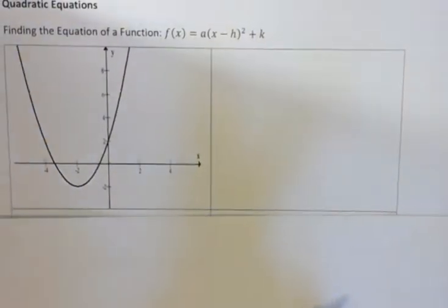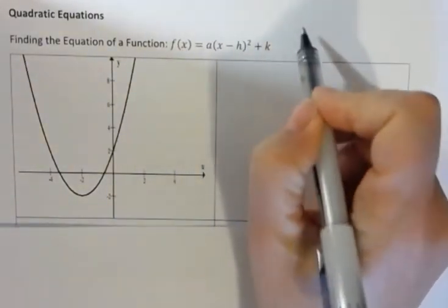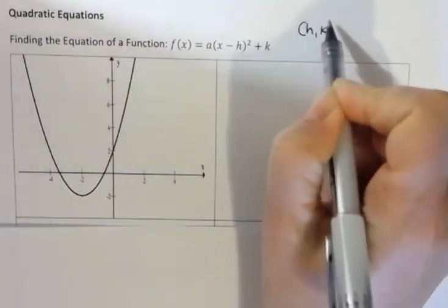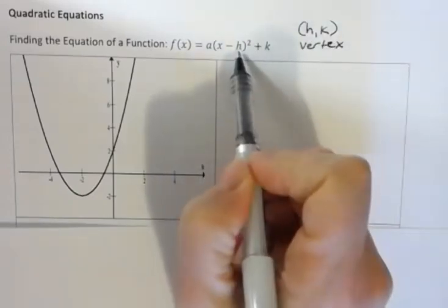So when I look at this graph, I know in this equation that h,k represents my vertex. So here's my h and here's my k.